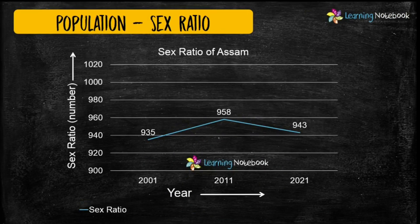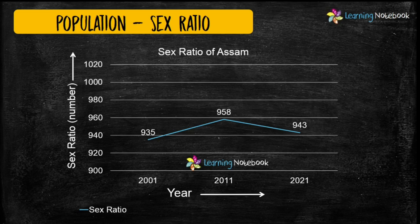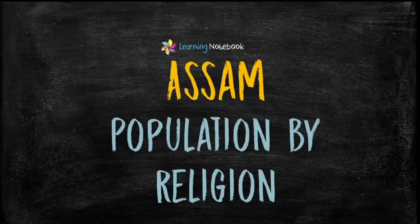Next, you can use a line chart to show the sex ratio of the population of Assam. Students, you can also include Assam population by religion in your Art Integrated Project.